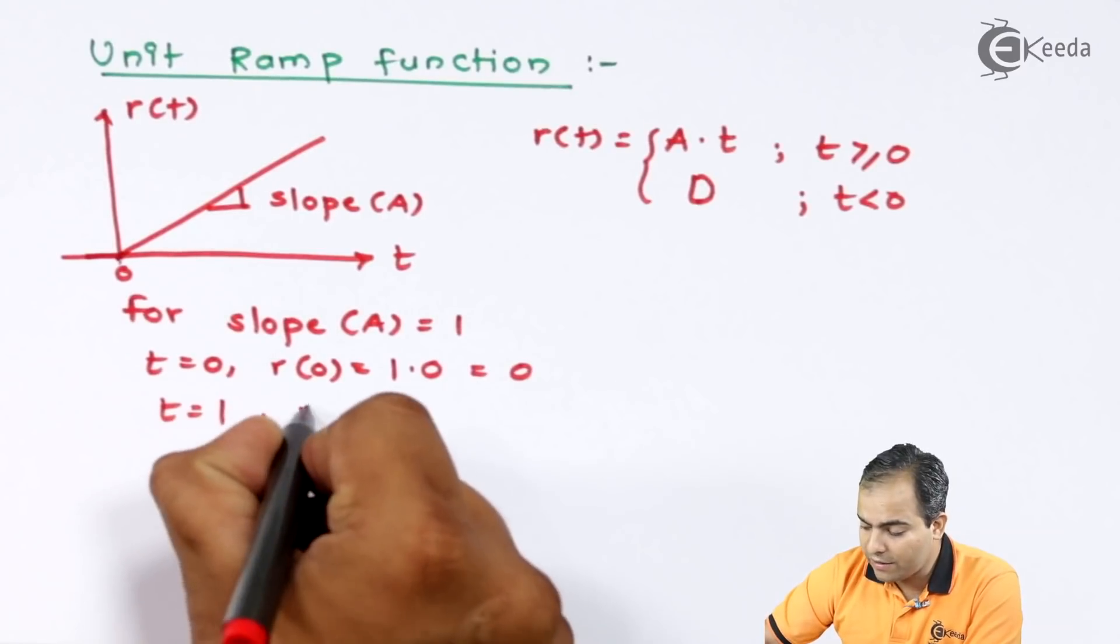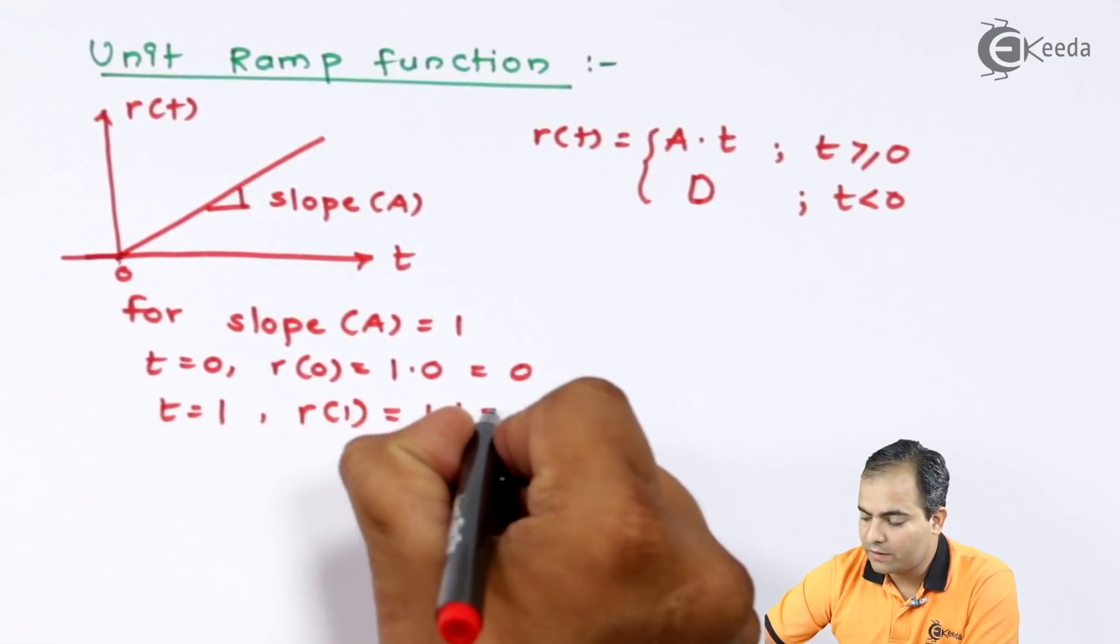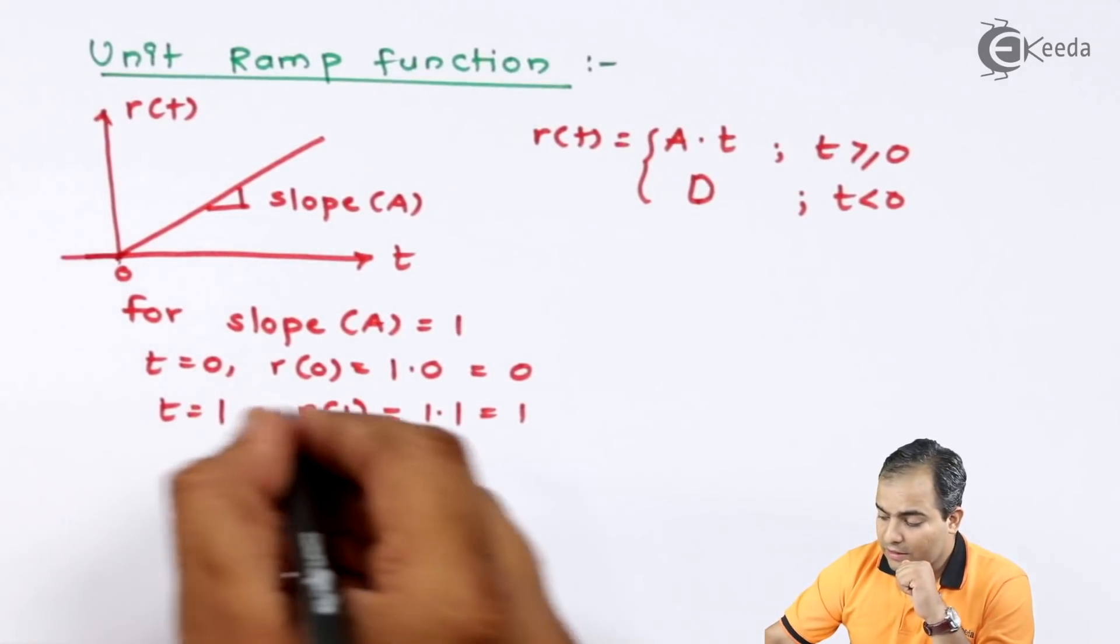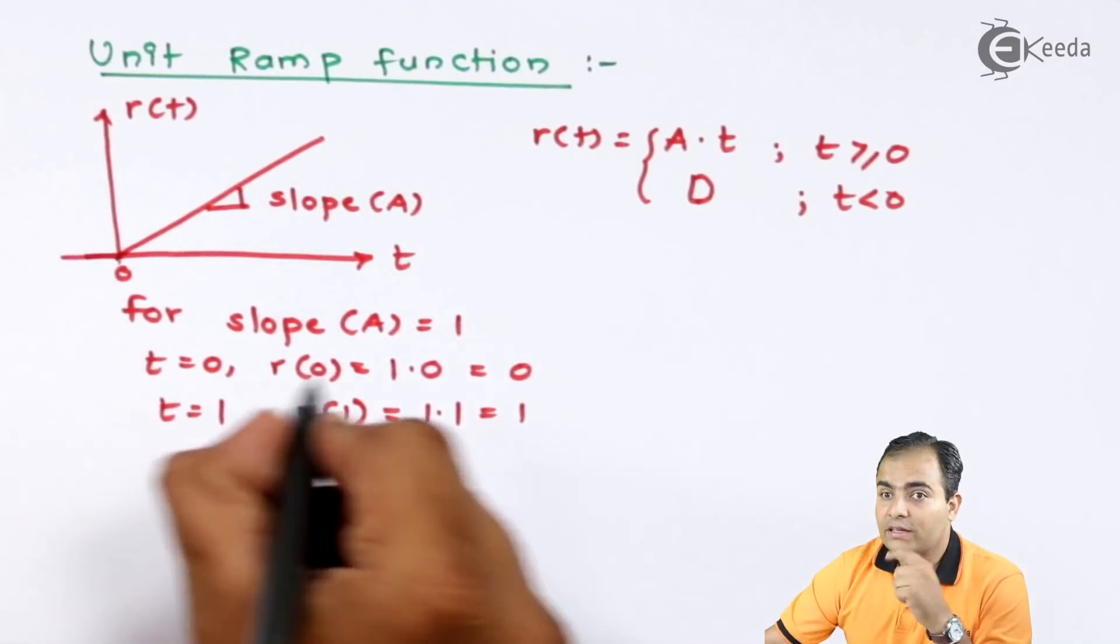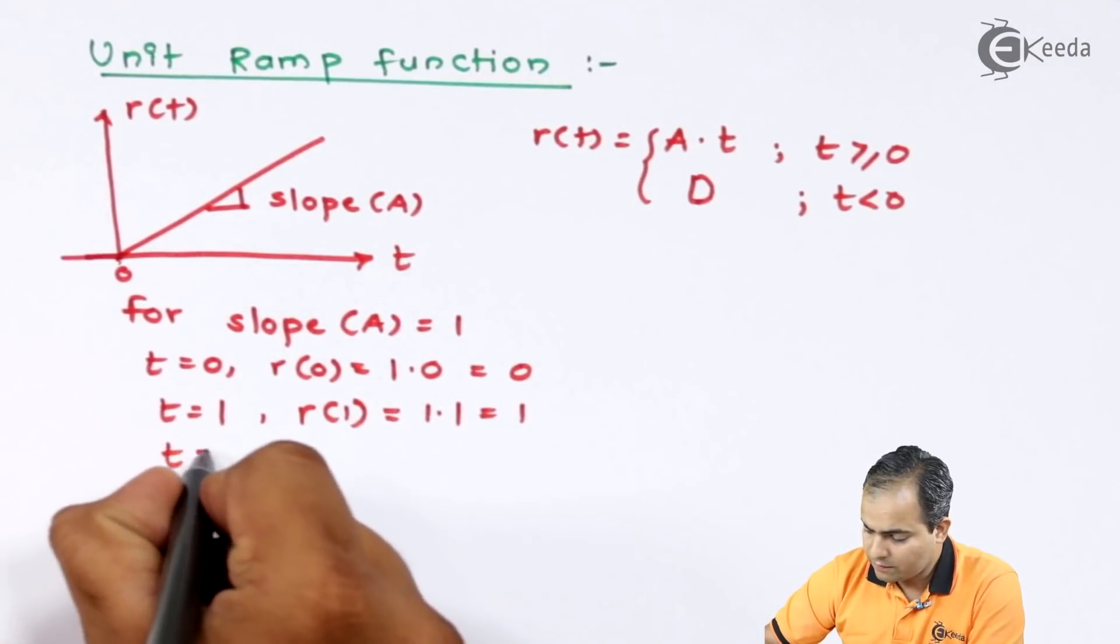For t equals to 1, the R of 1 will be 1 into 1, that will be 1, that will be again 1. Right now, for t equals to 1, the ramp wave is having amplitude 1.